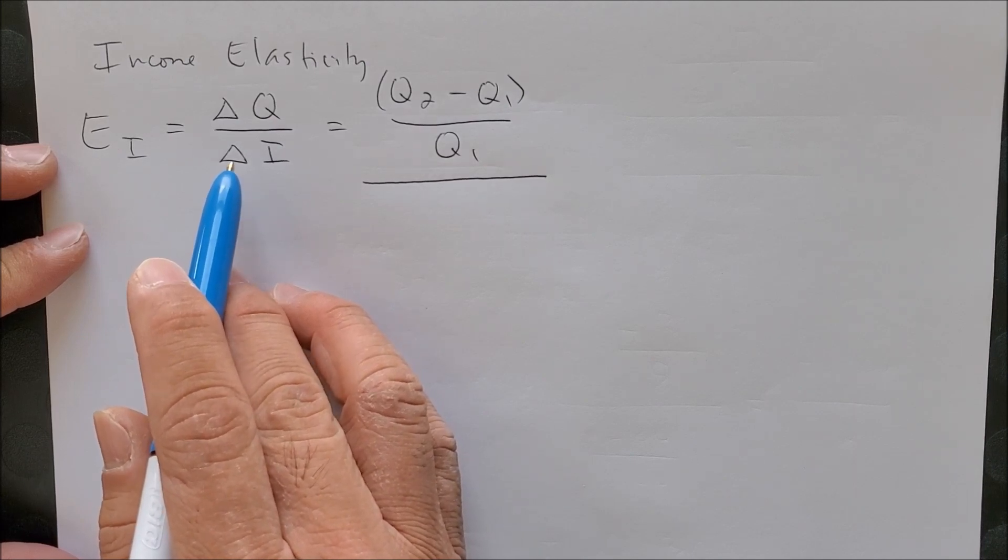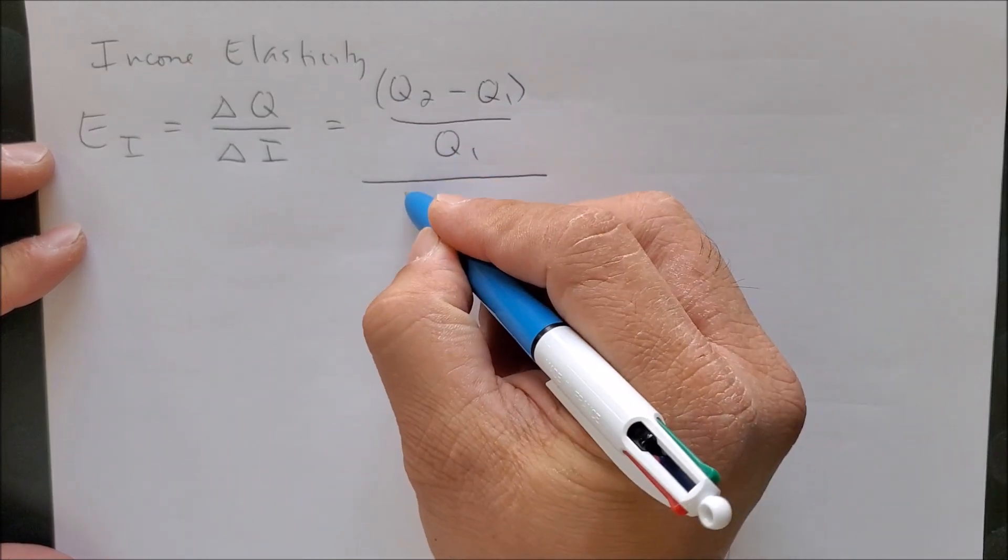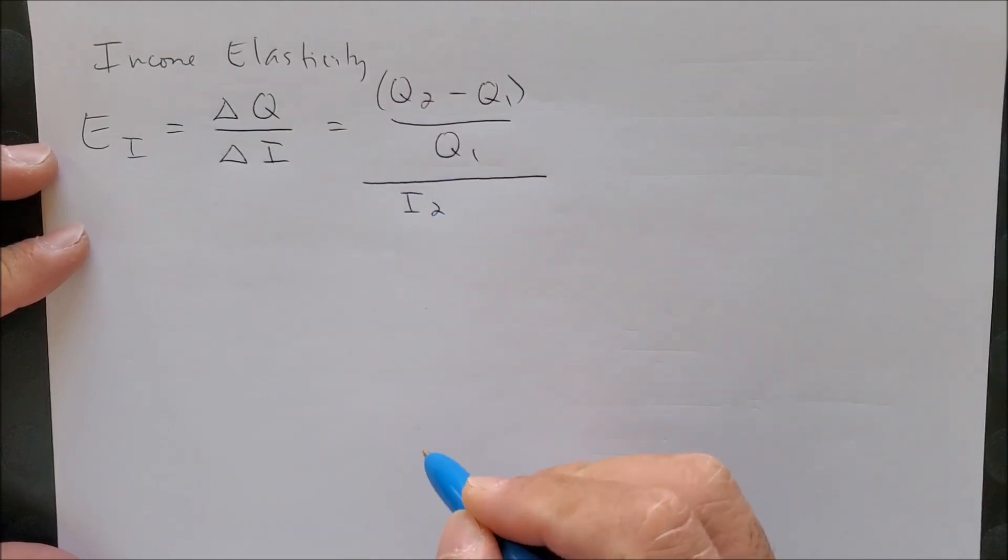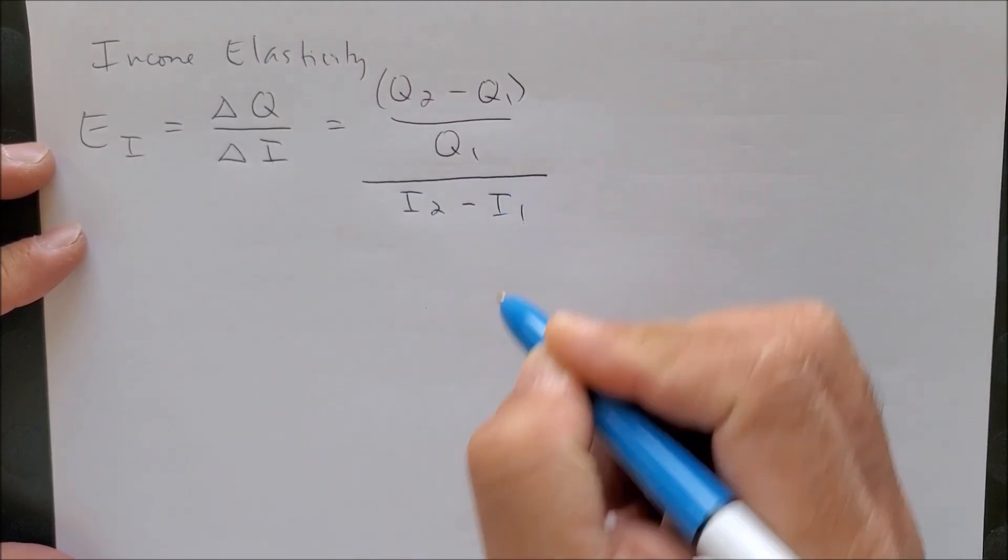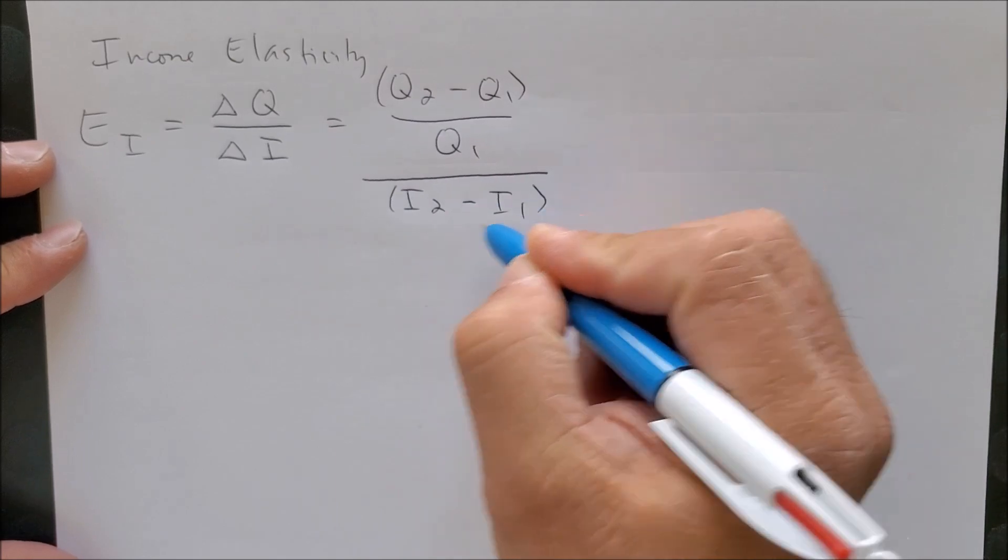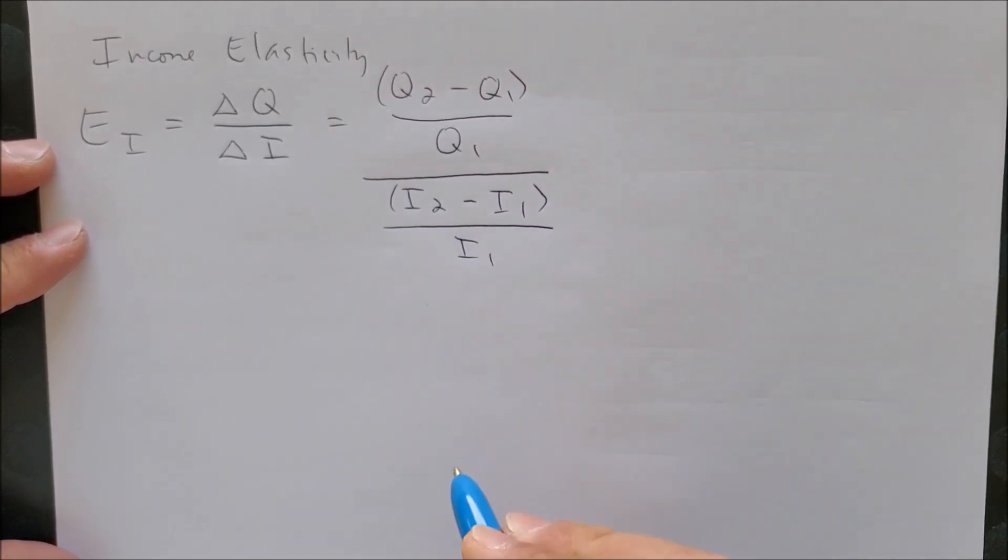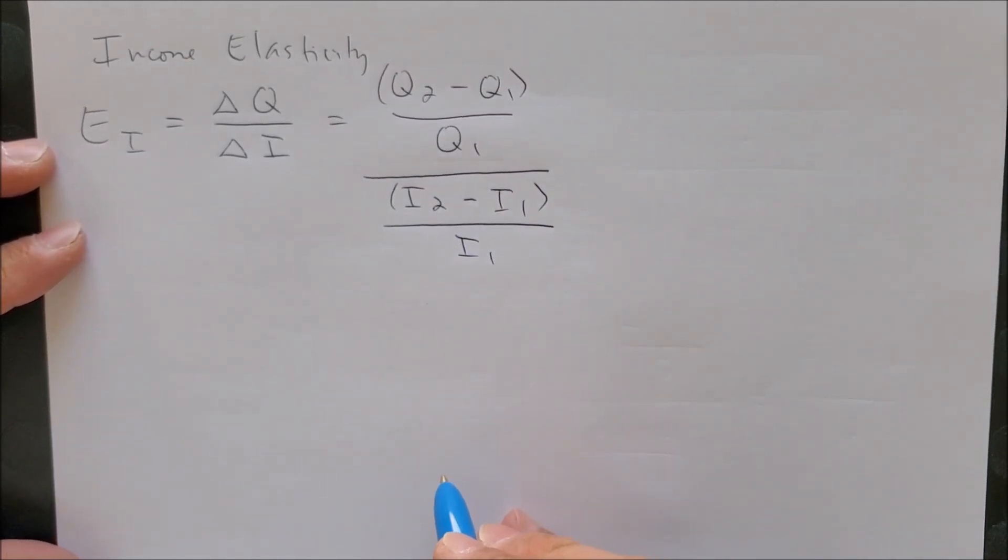Now we're gonna have the change in income to be the new income I2 minus I1 over the old income of I1. So to put this into perspective, let's use some examples where we no longer have numbers in percent format.